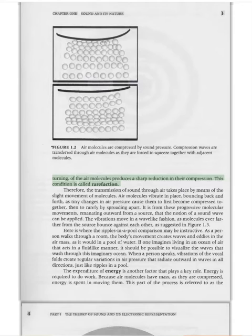This bouncing back, or returning, of the air molecules produces a sharp reduction in their compression. This condition is called rarefaction. Therefore, the transmission of sound through air takes place by means of slight movement of molecules. Air molecules vibrate in place, bouncing back and forth, as tiny changes in air pressure cause them to first become compressed together, then to rarefy by spreading apart. It is from these progressive molecular movements, emanating outward from a source, that the notion of a sound wave can be applied, as suggested in Figure 1.3.